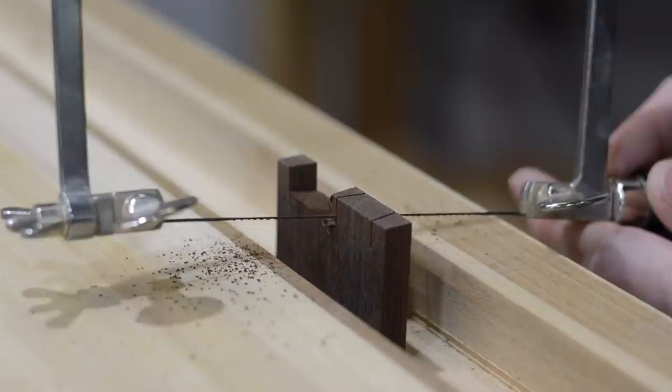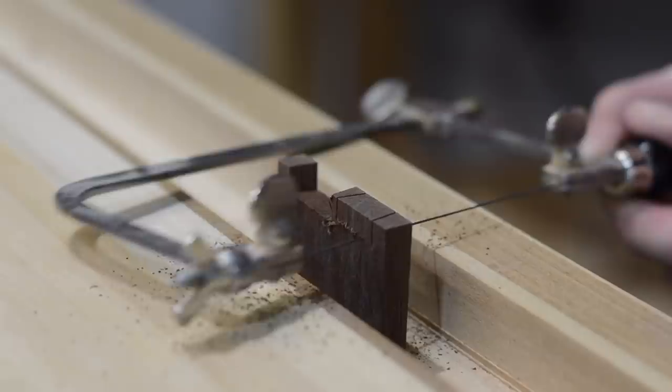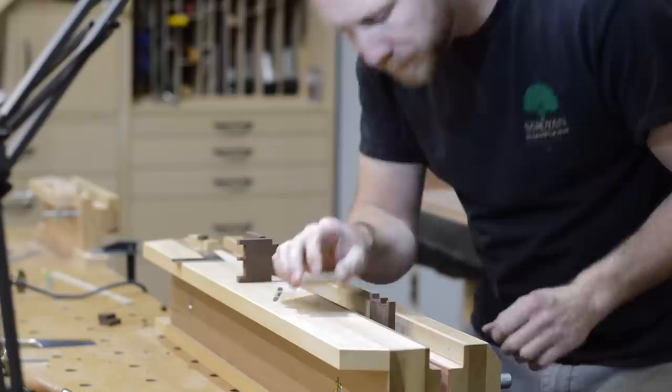This is called a fret saw. Some people call it a jeweler saw. And what I like about this particular saw is that the blade is thin enough to fit in the kerf of the Japanese style pull saws that I like to use.